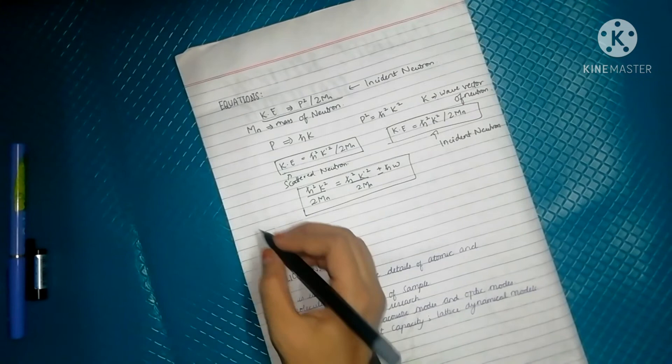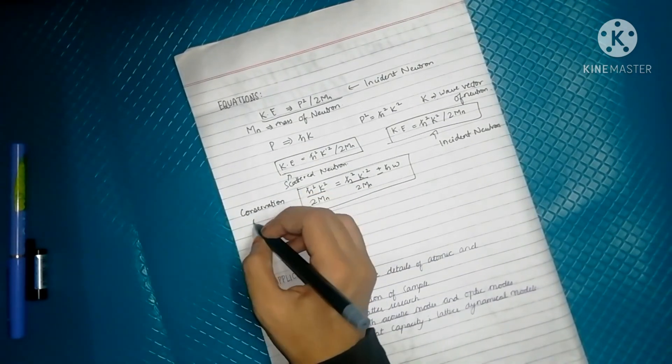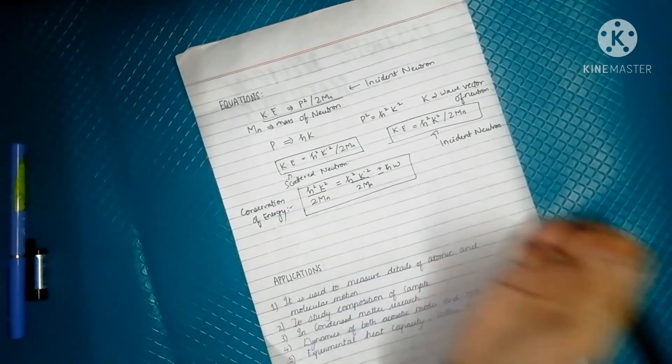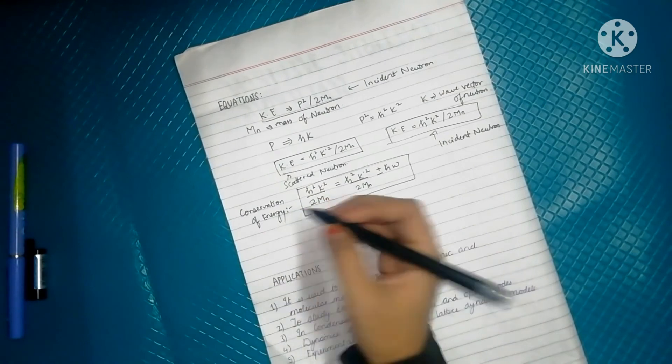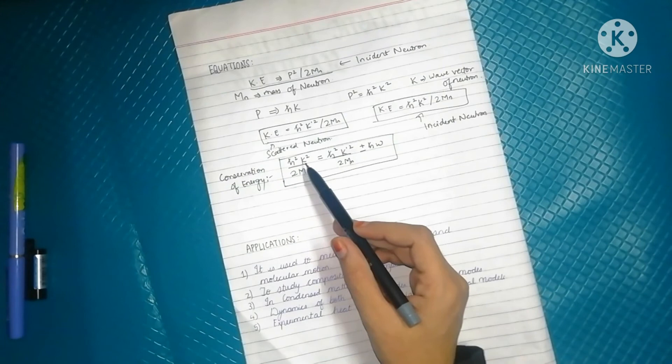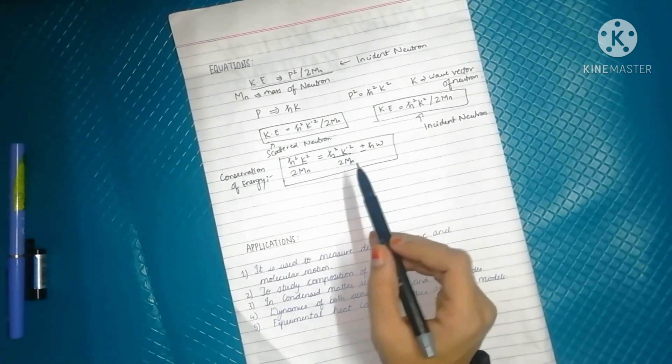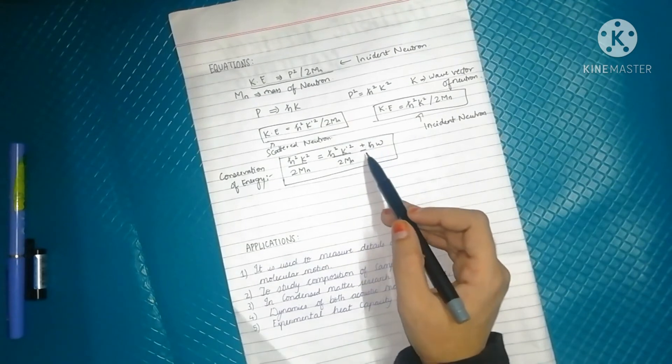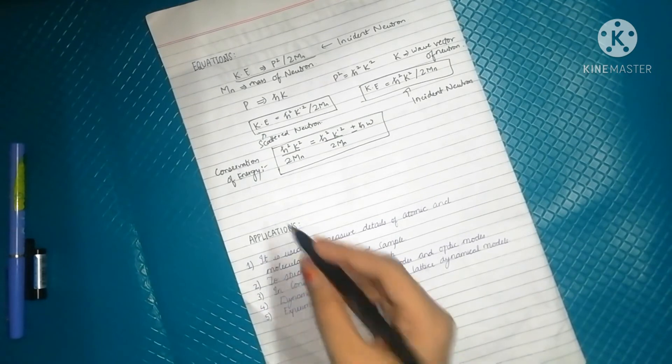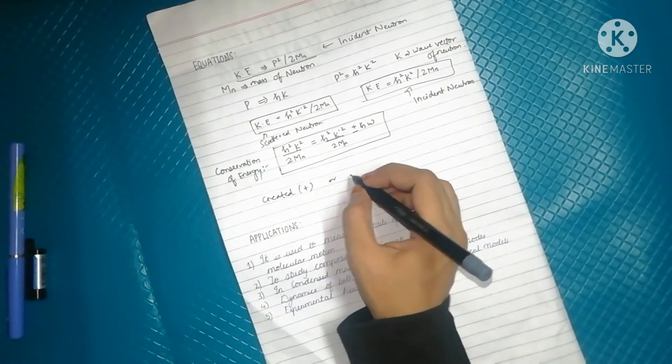Conservation of energy states that the energy should remain constant as ℏ²K² / 2M_n equals ℏ²K'² / 2M_n plus or minus ℏω. Here, ℏω is the energy of photon created or absorbed in the process.